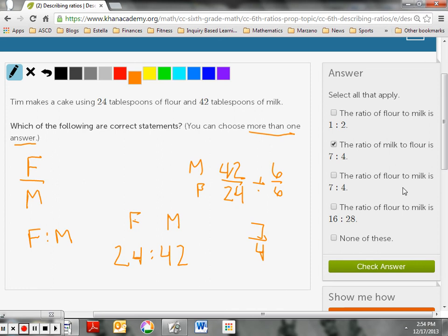Now the next one says the ratio of flour to milk is 7 to 4. Well that's not true because if I simplify this, it's actually 4 to 7 and not 7 to 4. And the ratio of flour to milk is 16 to 28. Now it looks like they divided this. Now let's see here. I'm going to take 16 to 28. And if I simplify 16 to 28, let's see what I get. Let's simplify this. Divide both by 4. And I get 4 to 7. Hey, look at that. That's the same as the flour to milk down here. So that would also work.